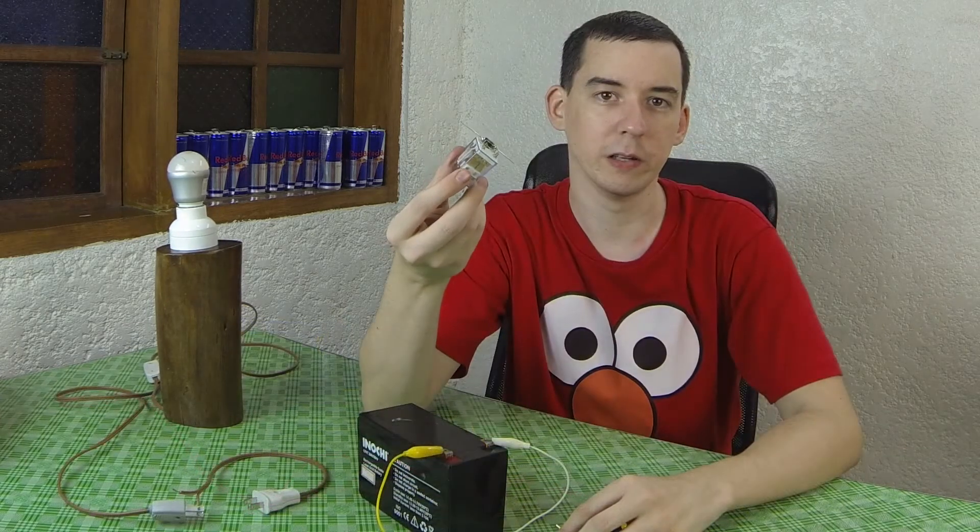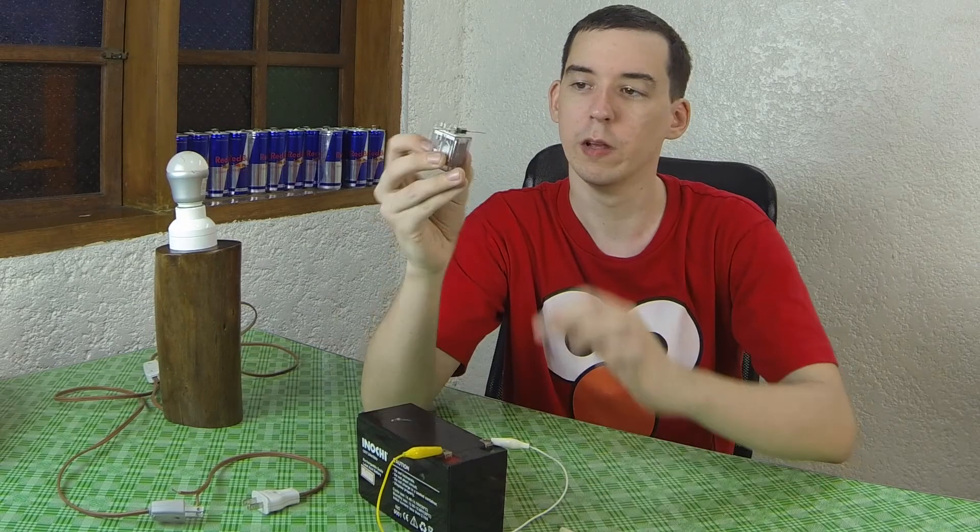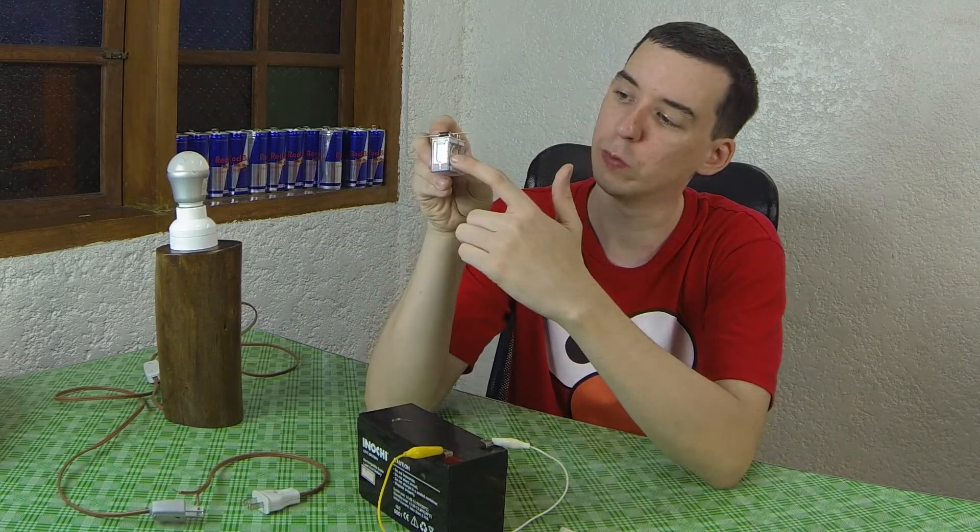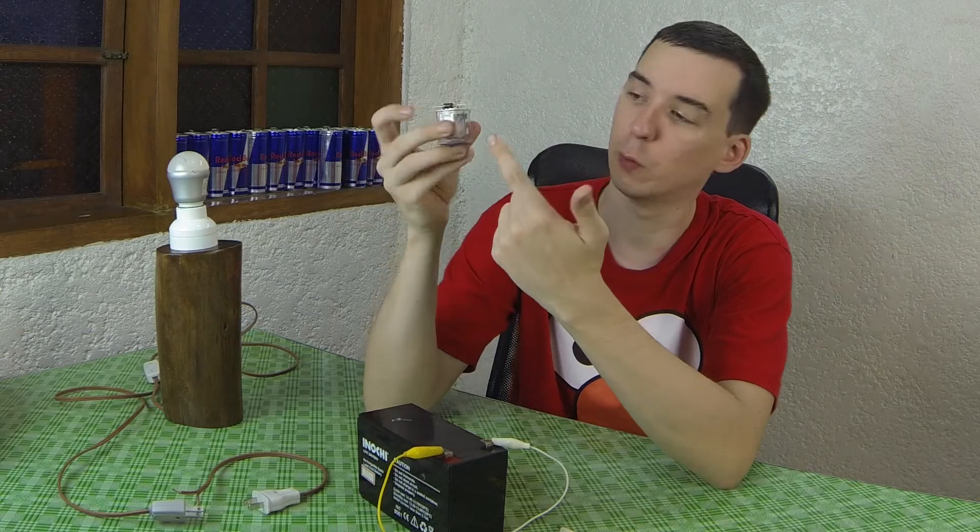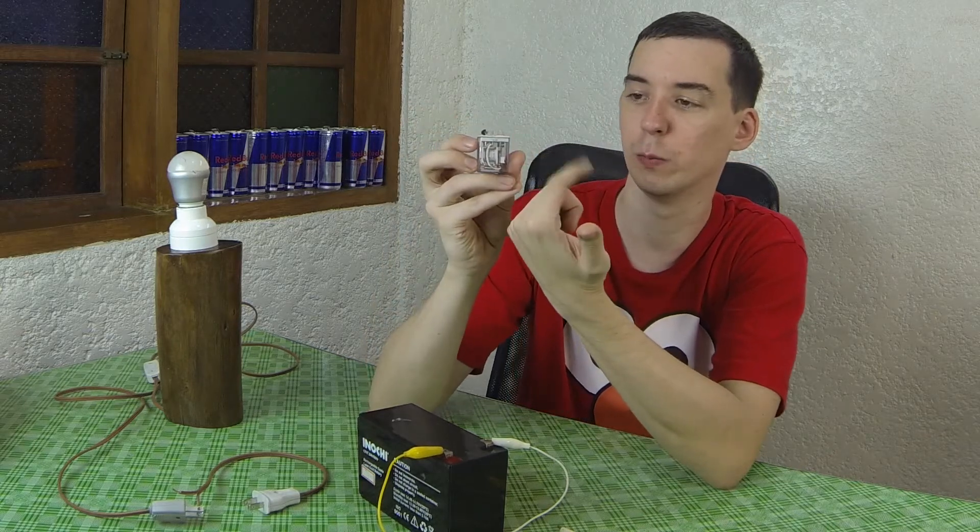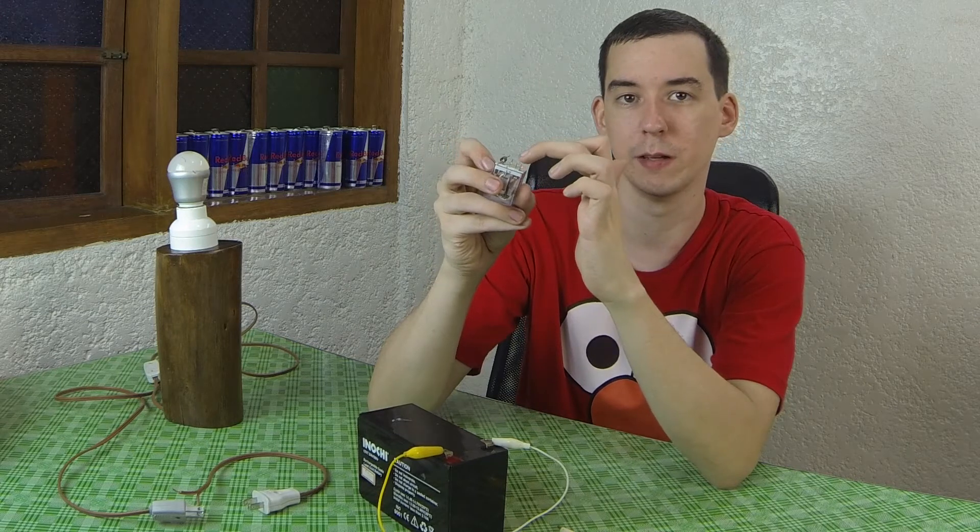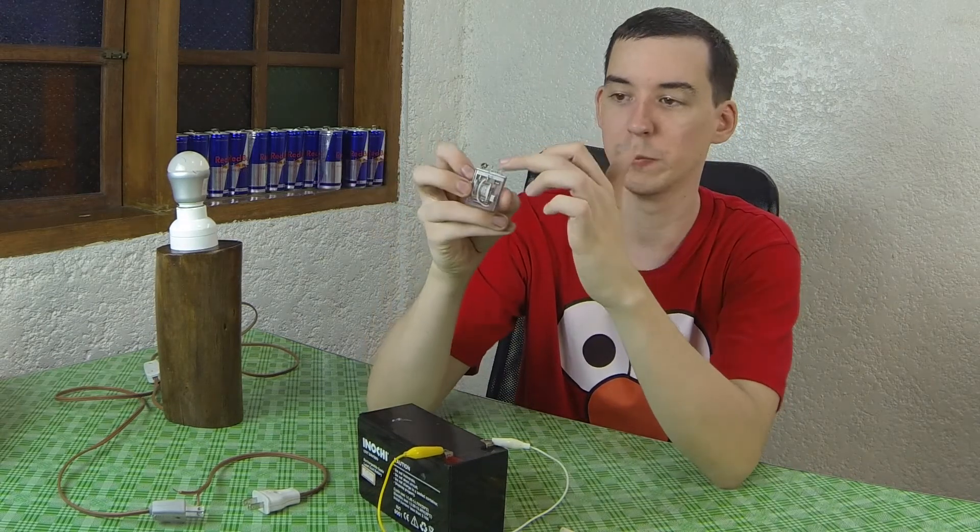So how does a relay actually work? Well it's pretty simple. You have two pins here and when power is applied it goes through a coil and it creates a magnetic field which basically pulls these contacts or pushes the contacts and makes them touch different pins. And depending on which pins are touching, those pins would be live.